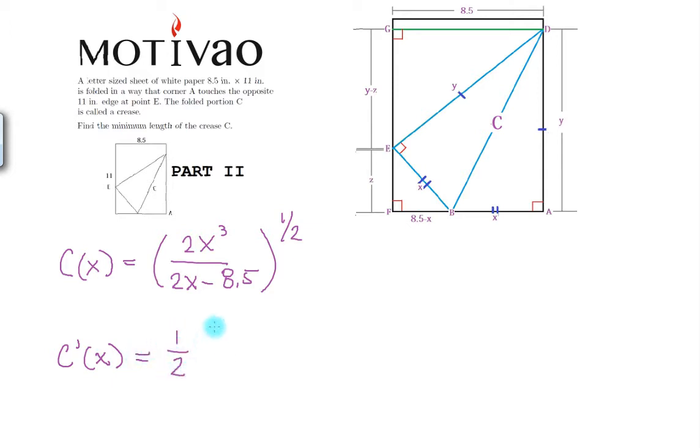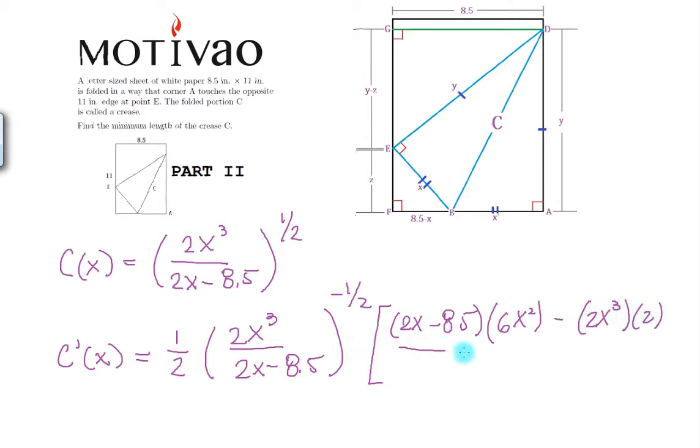So the derivative is what? It's 1 half to the minus 1 half times the derivative of the inside by chain rule. So the bottom one, this is a quotient rule, so it's the bottom times the derivative of the top, which is 6X squared, minus the top times the derivative of the bottom, which is just 2, divided by the bottom squared.